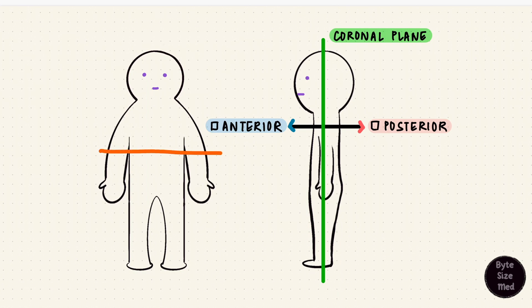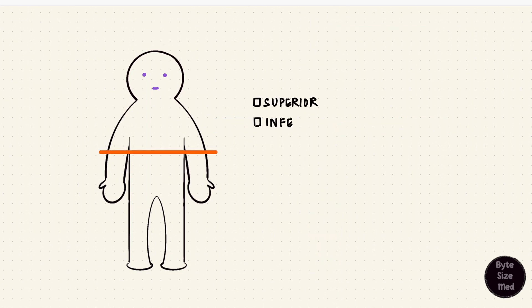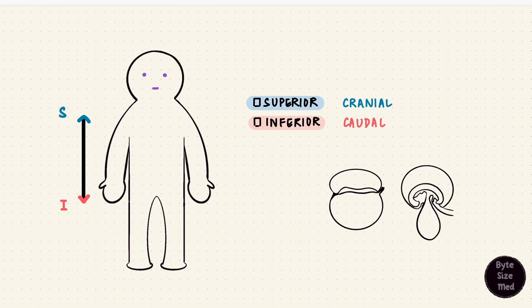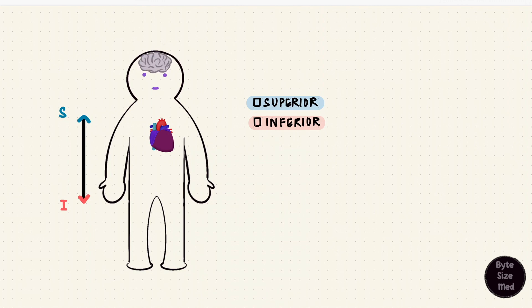The transverse plane divides the body into superior and inferior. Superior is towards the head, so it's also called cranial. Inferior is towards the feet, also called caudal. You'll see cranial and caudal more in embryology. If we look at superior and inferior, we'll pick up the heart again and put it below the brain. The heart is inferior to the brain, but the brain is superior to the heart. Superior is above, and inferior is below.